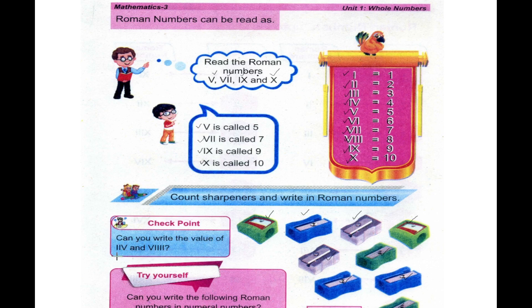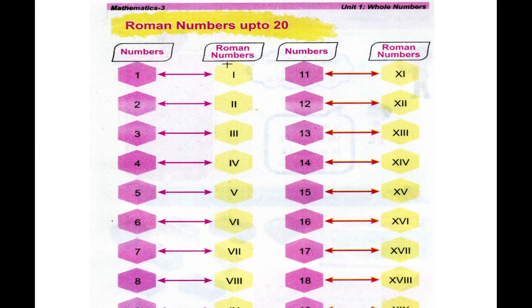Can you write the value of IIV and V triple I? Now you can see IV is 4, and this is double I. Can you write the following Roman numbers in numeral numbers? We have 7, we have 9, we have 7. We have these numbers from 1 to 10, and these are our Roman numbers.